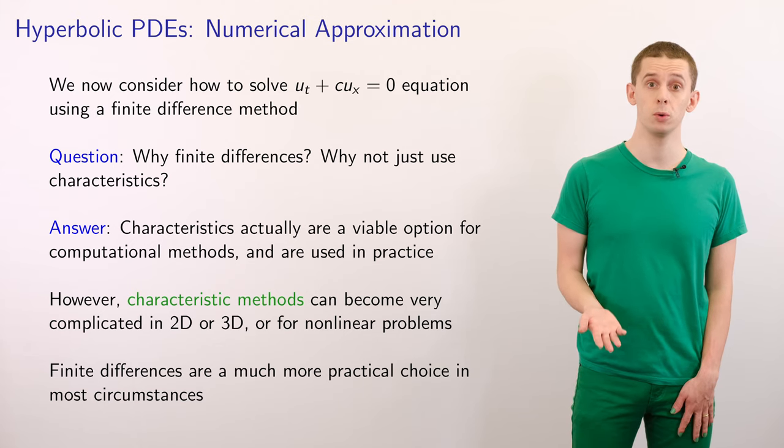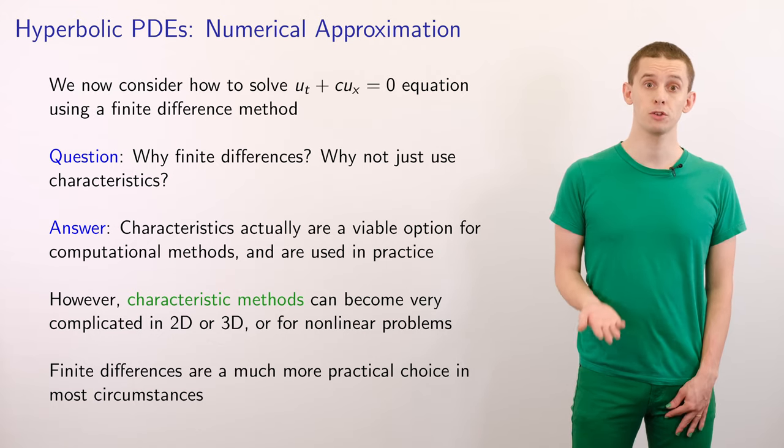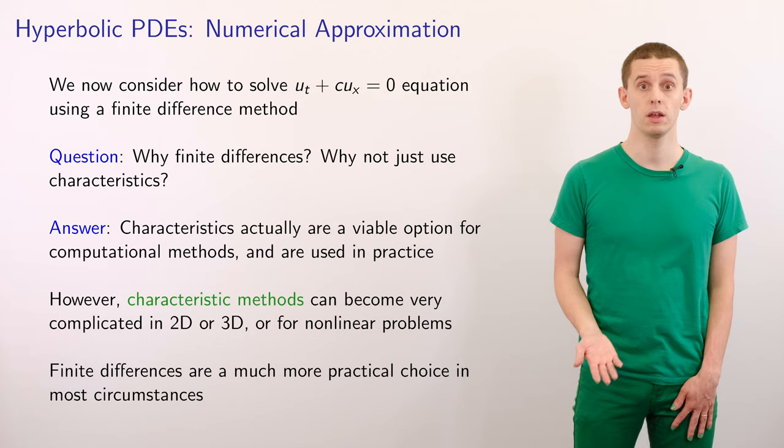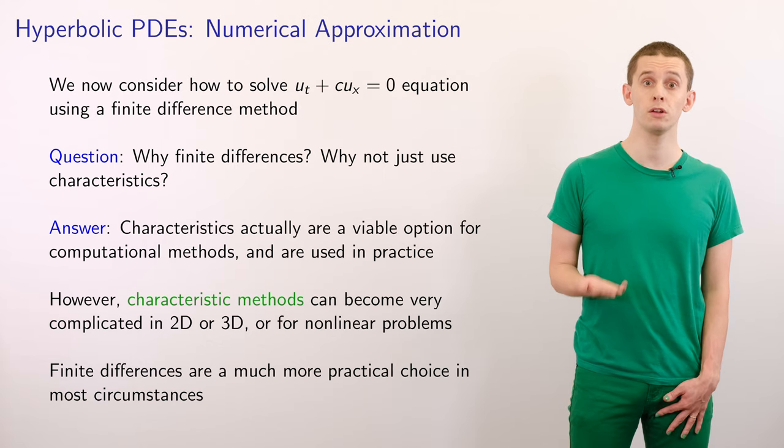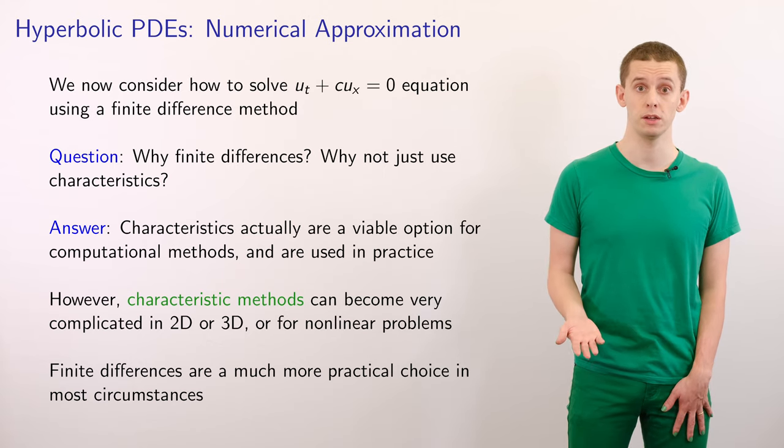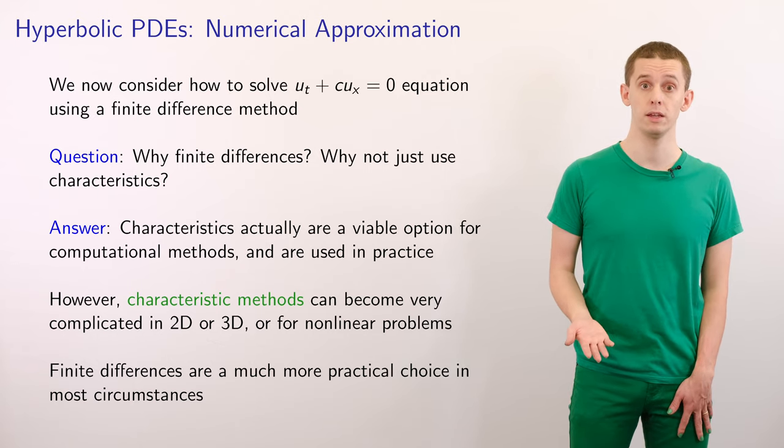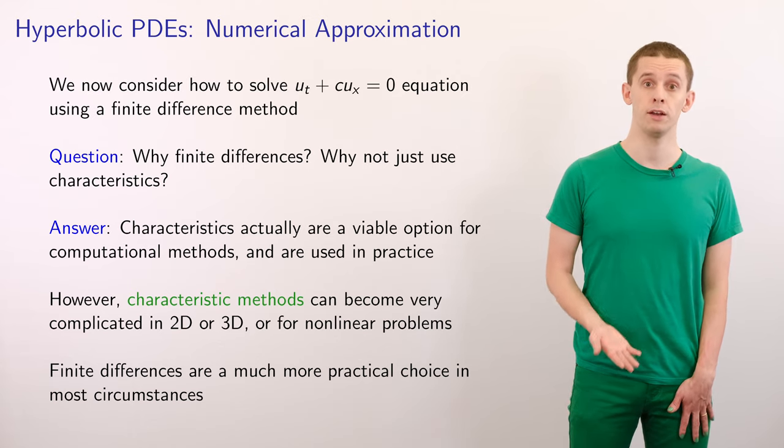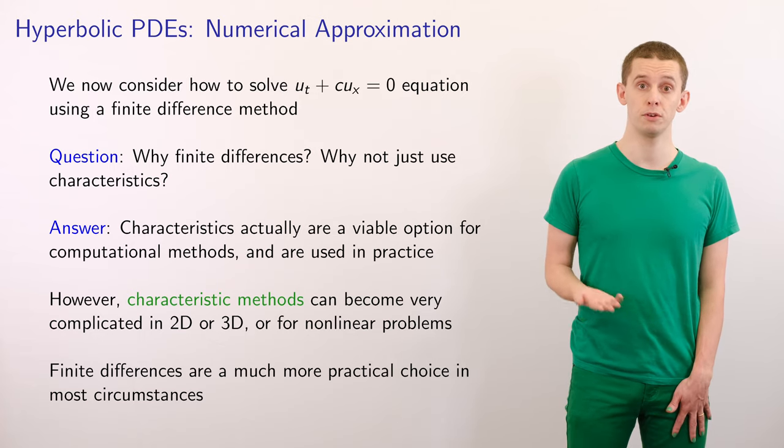We now consider solving the linear advection equation, ut plus c ux equals zero, using a finite difference method. And you might ask why we use finite differences. In the previous video, we looked at analyzing the linear advection equation using characteristics, which gave us insight into the flow of information and also allowed us to solve a PDE by reducing it to a family of ODEs. And in fact, characteristics are a viable solution technique for a PDE. However, they become complicated in two and three dimensions, and also for non-linear problems. And finite differences are actually a much more practical choice that can apply over a broad variety of cases.